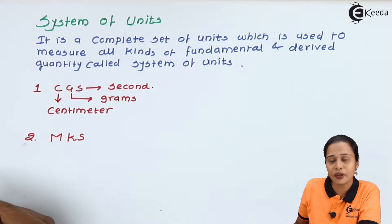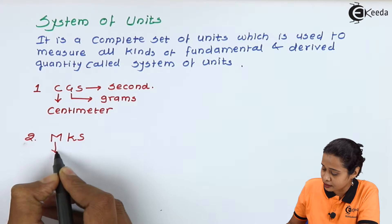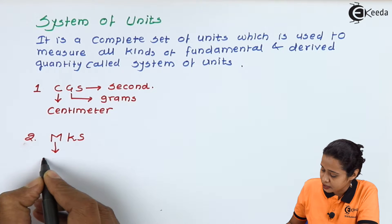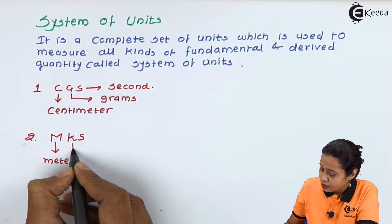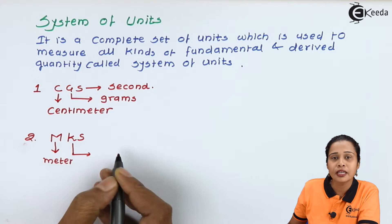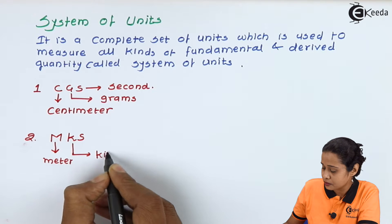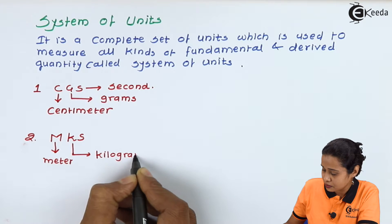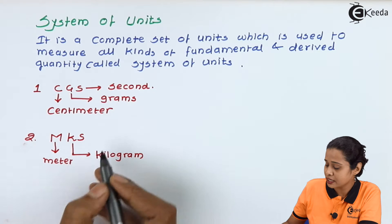Let us start with the second system that is MKS. In case of MKS system, we measure length in meters. We measure mass in kilograms. And we measure time in seconds.